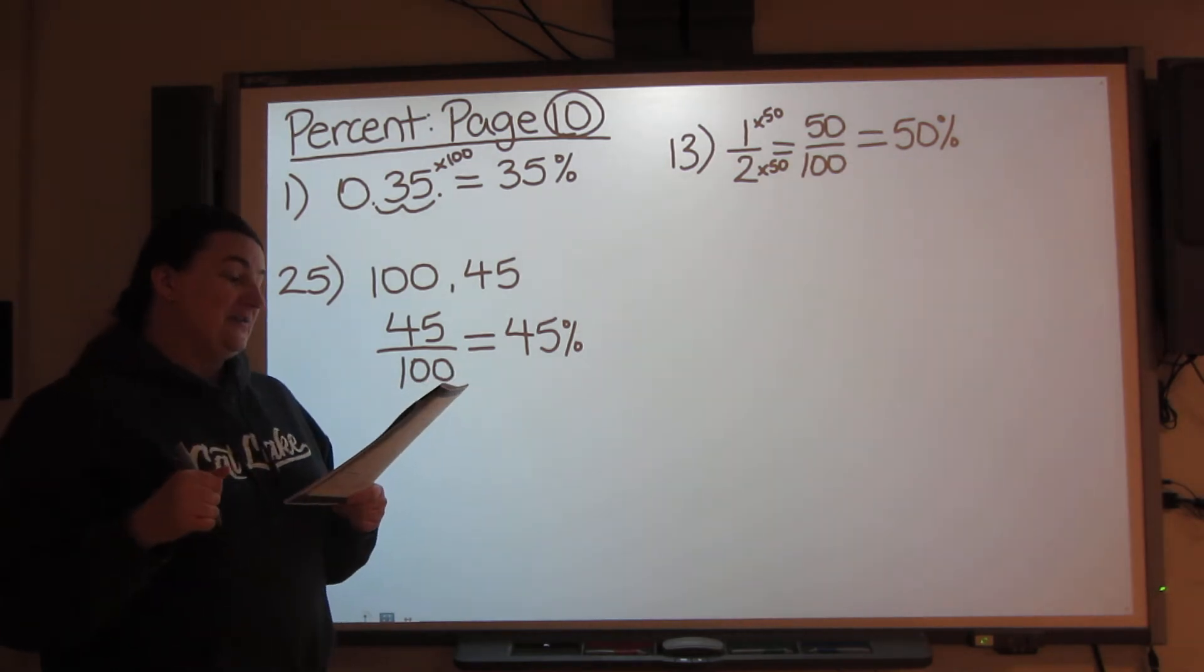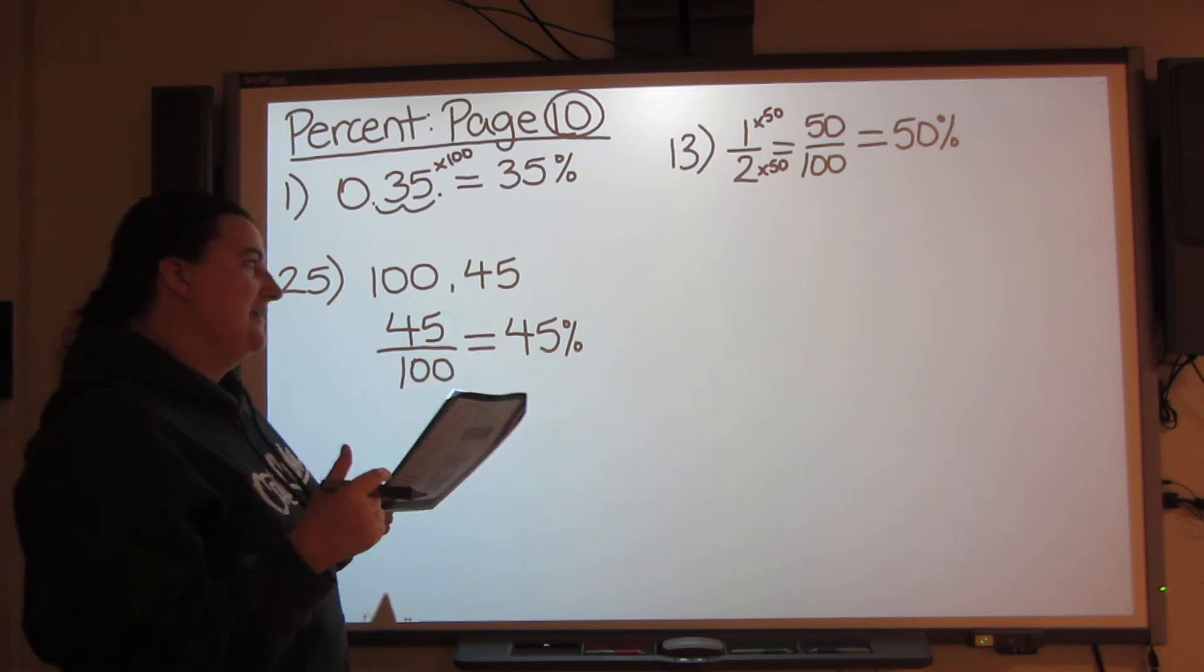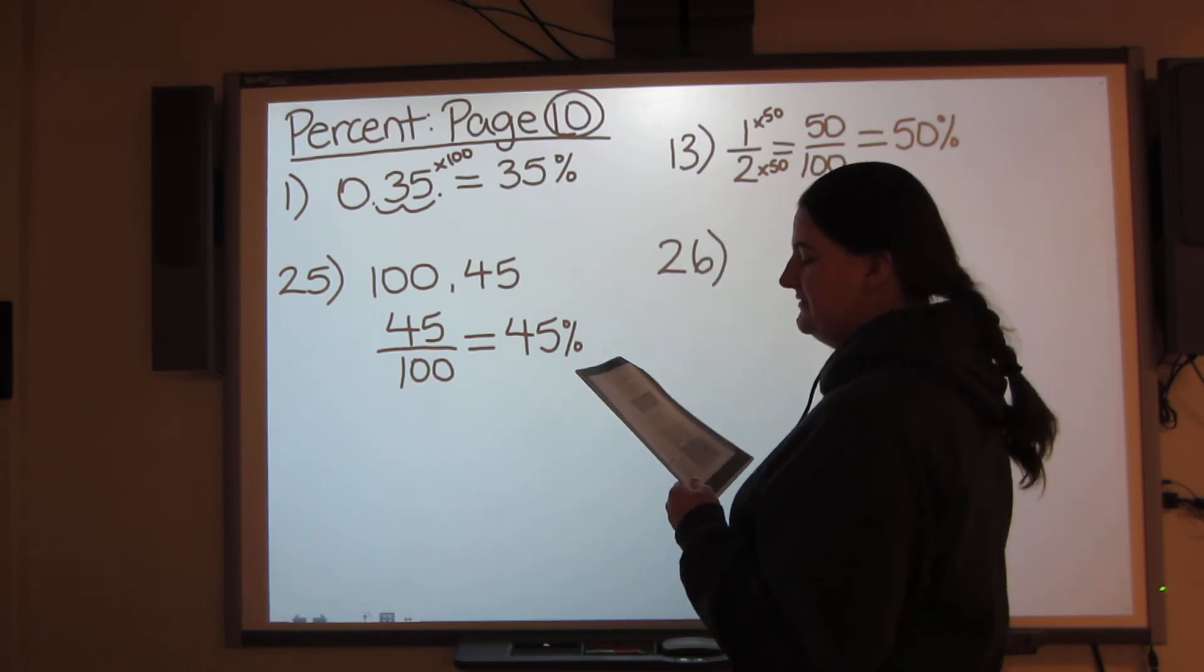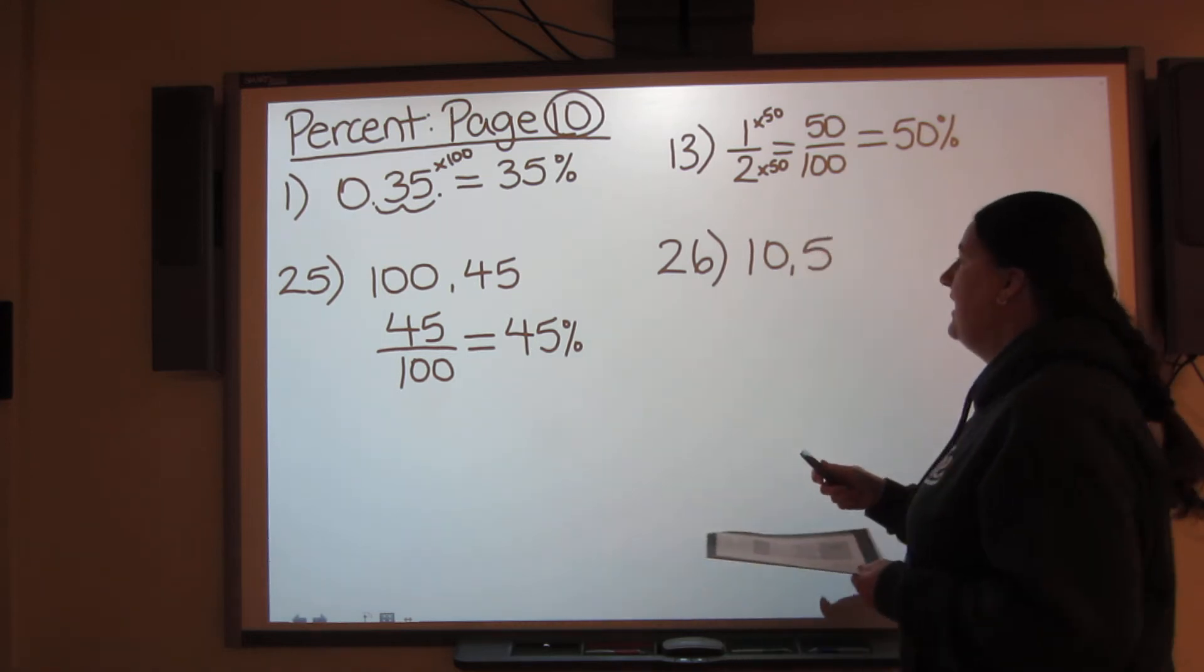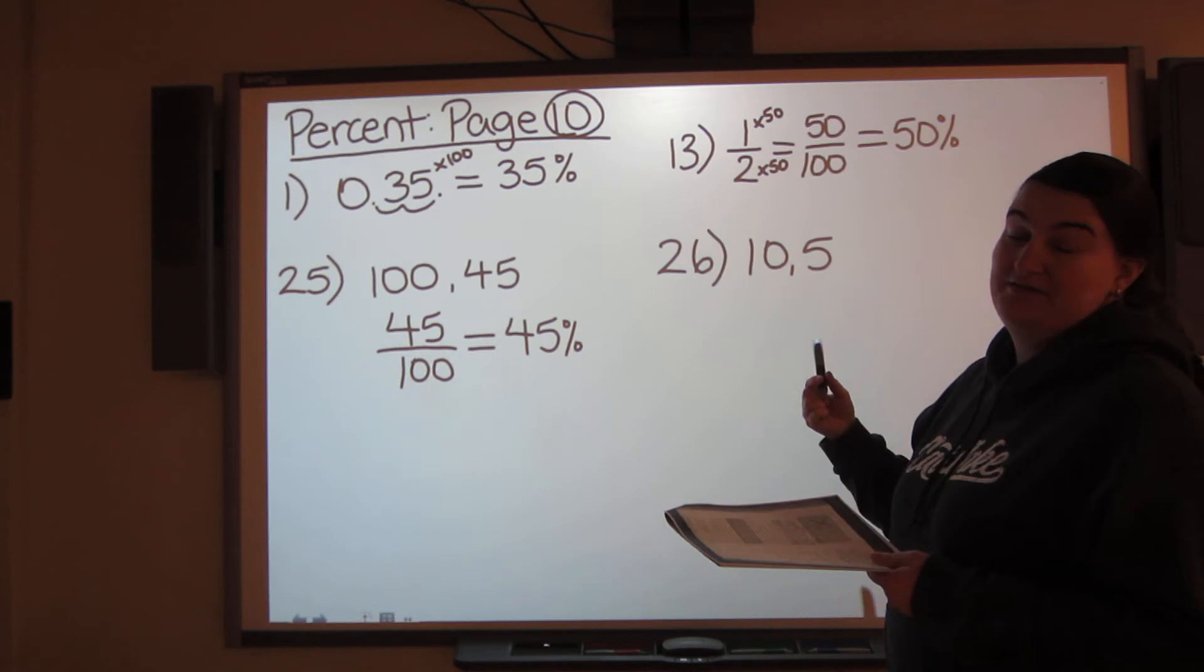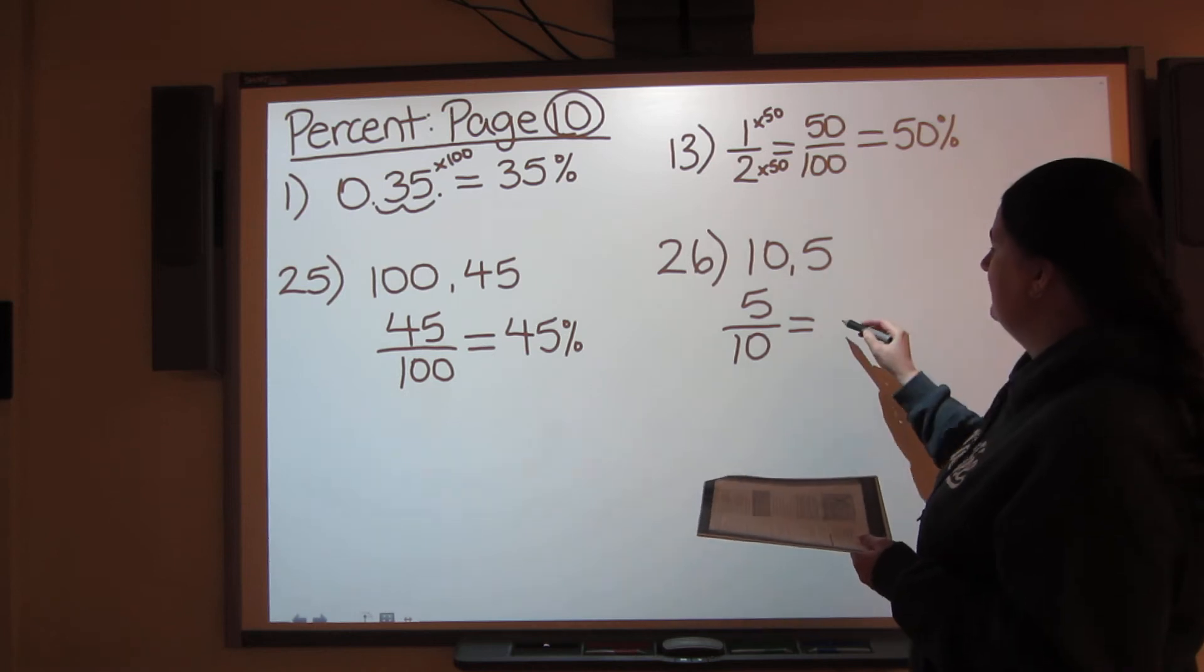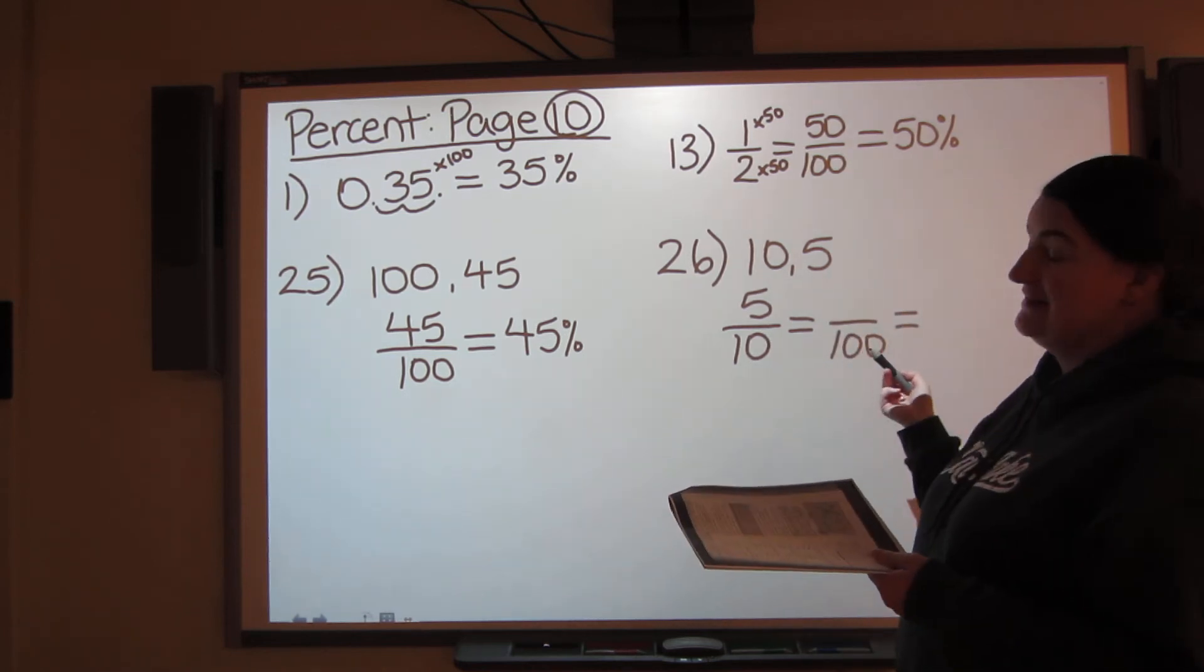If you take a look at number 26, it's not going to be quite as easy. It's still kind of easy though. Number 26 gives us 10 and 5. So what percent is 5 out of 10? Well, again, these ones are pretty easy because you can change it to a denominator of 100 to get your percent quite quickly.